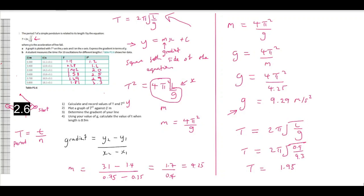However, they actually want to find the value of T, which is simply the time taken to complete 10 oscillations. So, simply put, we just multiply the number of oscillations by the period. And that would then give us 19.5 seconds.